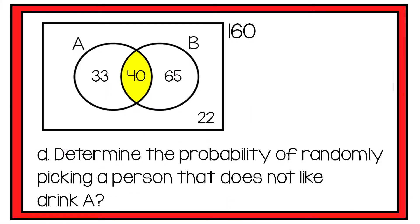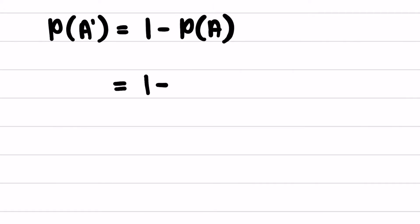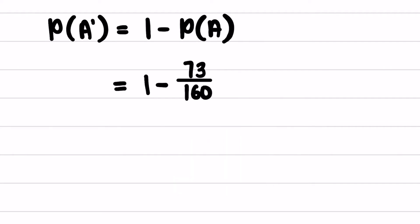Determine the probability of randomly picking a person that doesn't like brand A. The probability of not A equals 1 minus the probability of liking A. The people within the A circle are the 33 in A only plus the 40 in the intersection, which is 73 out of 160. So the probability of not A is 87 out of 160.